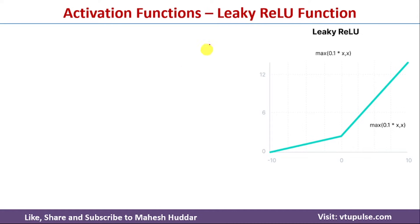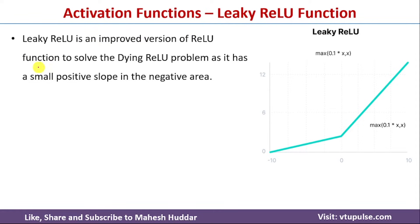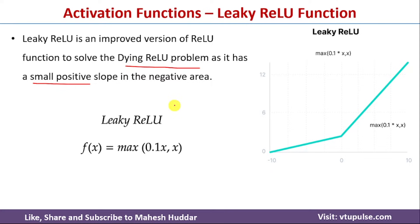A variation of ReLU is the Leaky ReLU activation function. Leaky ReLU is an improved version of ReLU that solves the dying ReLU problem by having a small positive slope for the negative area. When the input is less than 0, in ReLU the output was 0, but in Leaky ReLU it is not 0 — there is a very small positive slope giving a small negative output. The function is f(x) = max(0.1x, x), where 0.1 is the small positive slope for negative inputs.